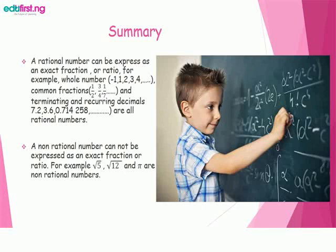A non-rational number cannot be expressed as an exact fraction or ratio. For example, square root of 5, square root of 12, and pi are non-rational numbers.